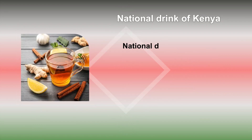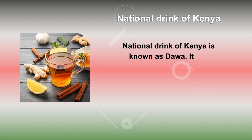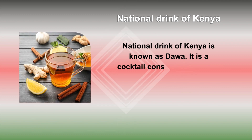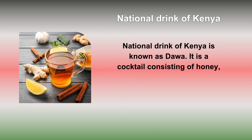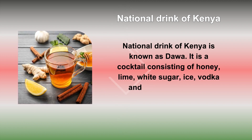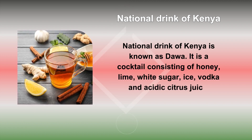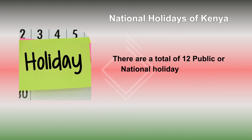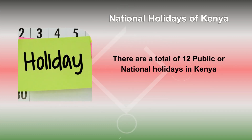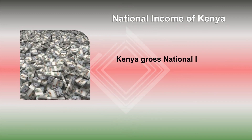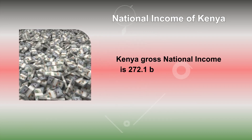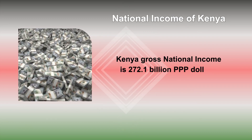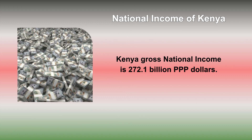The National Drink of Kenya is known as Dawa. It is a cocktail consisting of honey, lime, white sugar, ice, vodka, and acidic citrus juice. There are a total of 12 public or national holidays in Kenya. Kenya's gross national income is 272.1 billion PPP dollars.